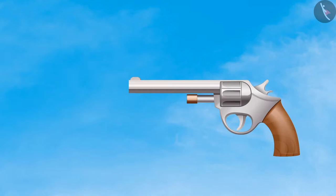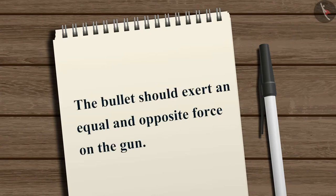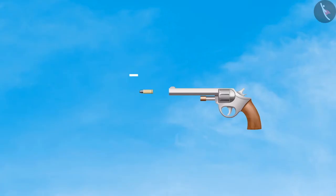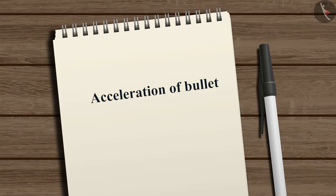Consider the case of firing a gun. The gun exerts a force on the bullet in the forward direction when it fires. According to the third law of motion, the bullet exerts an equal and opposite force on the gun, which results in the recoil of the gun. However, the mass of the bullet is much smaller than the mass of the gun, so the acceleration of the bullet is much greater than the acceleration of the gun.